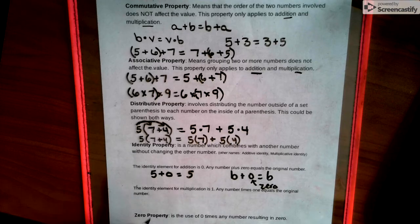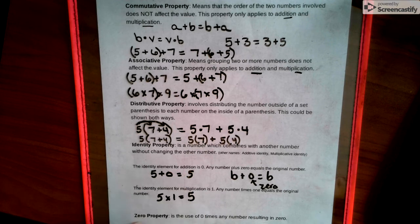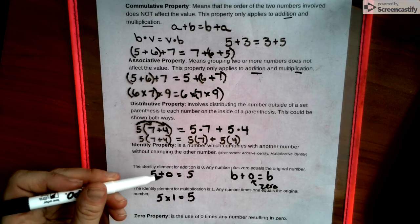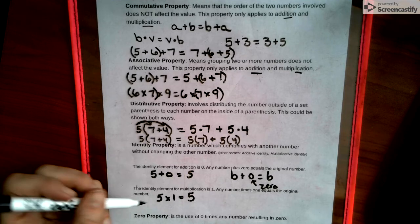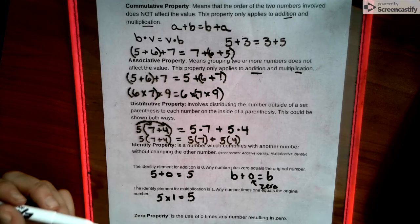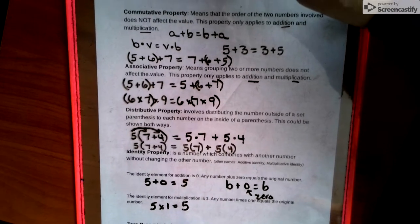And the identity element for multiplication is one, because I could go five multiplied by one and I'm still going to get itself. So you can think about it like if a person, so you have Susie plus nothing and we still have Susie, where if we have Susie and we times her by one we still have Susie. Another way of looking at it. Now at the very very bottom I'm going to shift my doc cam.